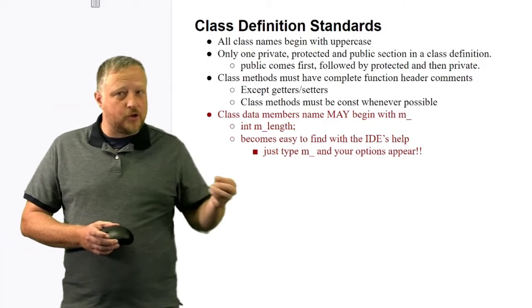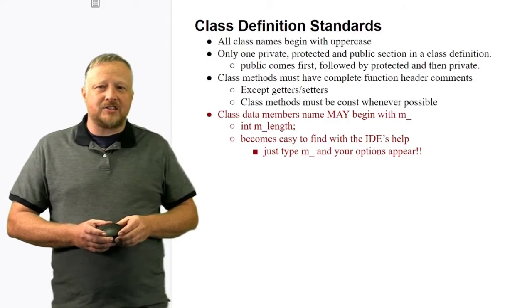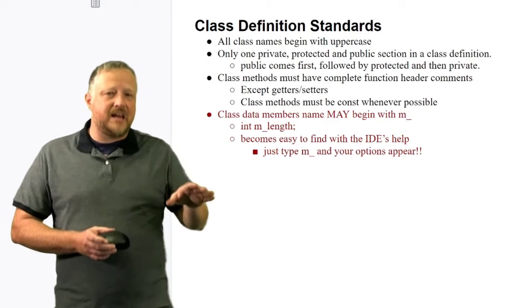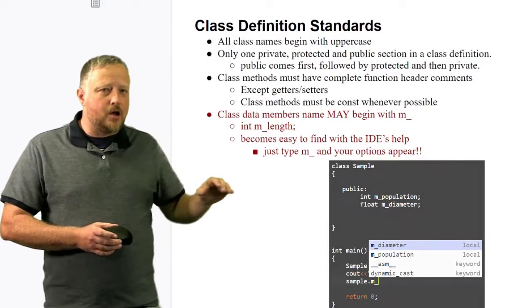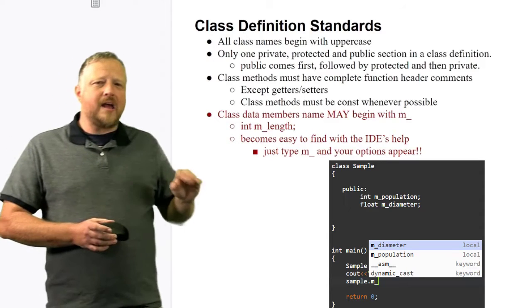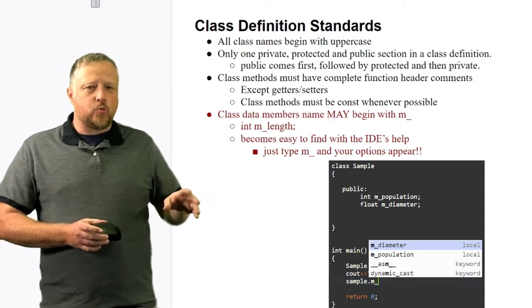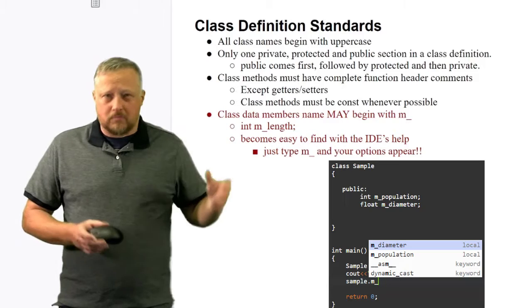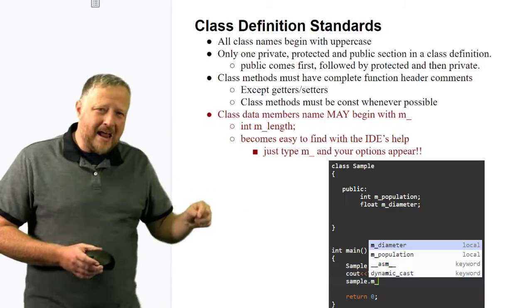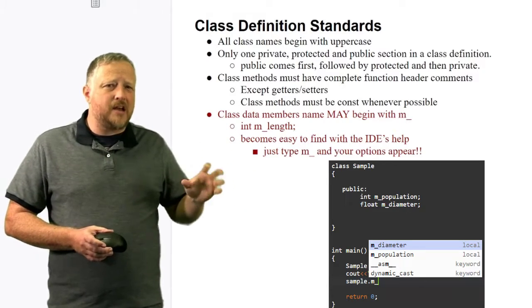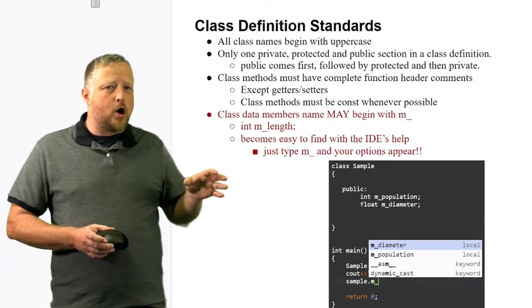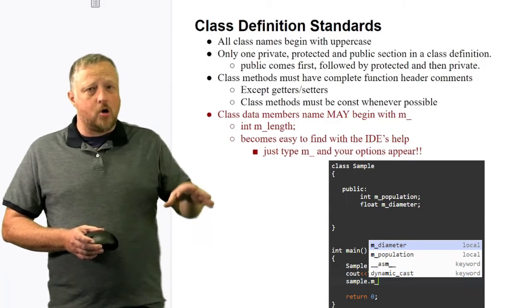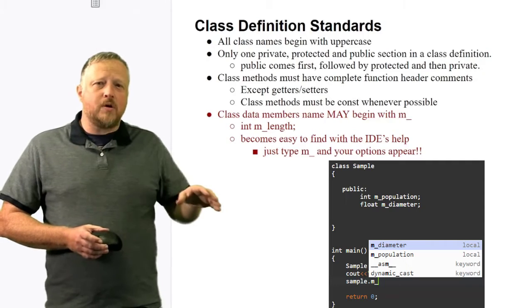Your class data members may begin with M underscore. And why M underscore? Well, here's why. Number one, M means member. But M and then the underscore—that's a unique combination that you're probably not going to see all that often in your coding.